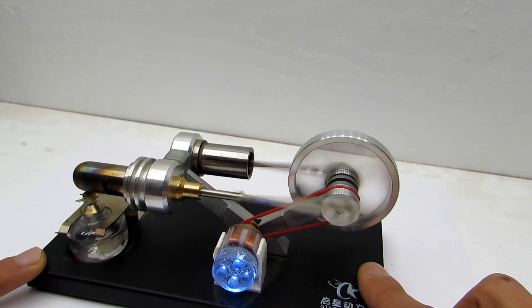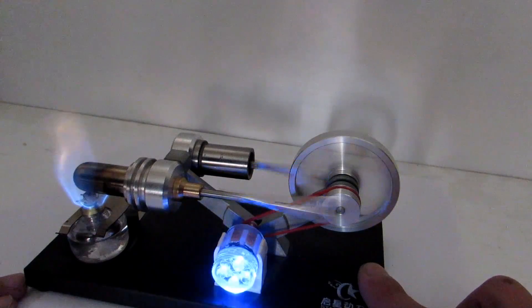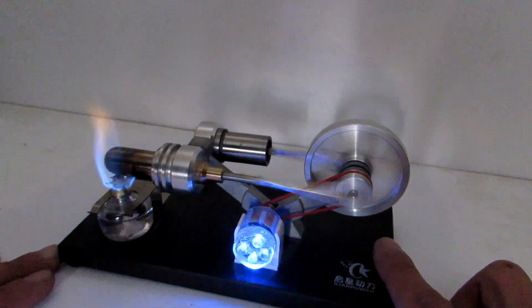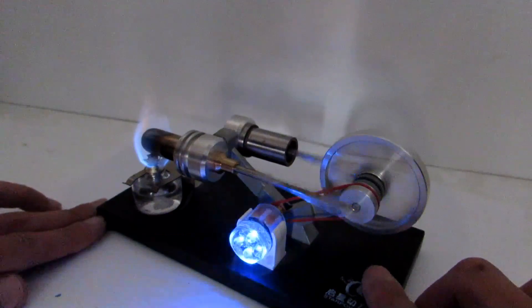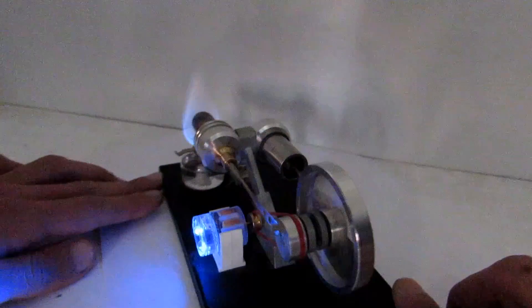In this model, there are a few transformations of energy. First, energy of working fluid is converted into reciprocating motion. Then, it's converted to rotational motion. Then, into electrical energy. And LEDs turn it into light. It looks like a simple model, but includes all the popular types of transformations.